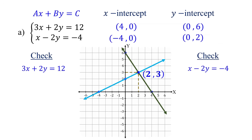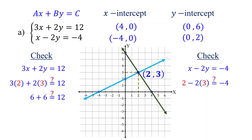We can verify this solution by substituting it into both equations. Substitute 2 for x and 3 for y. In the first equation, 3 times 2 is 6, and 2 times 3 is also 6, which adds up to 12. In the second equation, 2 times 3 equals 6, and 2 minus 6 equals negative 4. As you can see, both equations are satisfied, confirming that the ordered pair (2, 3) is indeed the solution.